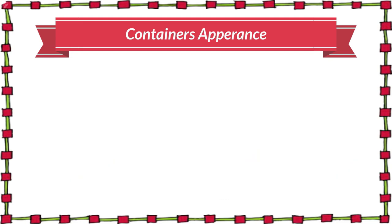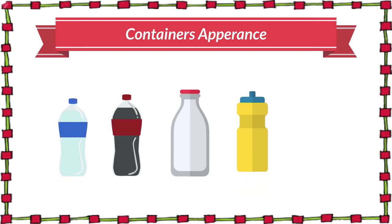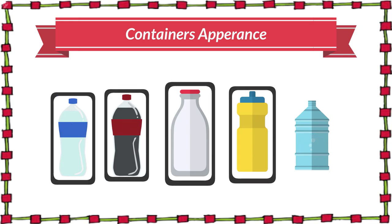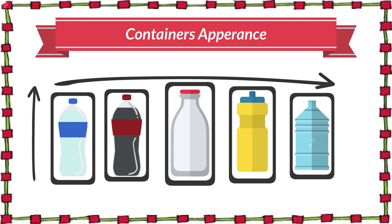Sometimes containers appear larger or smaller than others, but in reality they are not, because they have the same amount of space for holding water and other liquids. For example, have a look at these five different bottles. They have different shapes, colours, and slightly different heights and widths, but they all have the same capacity — that is one litre.